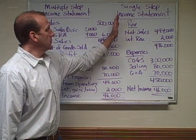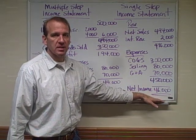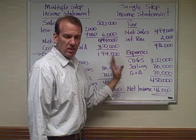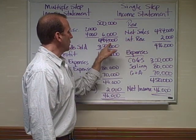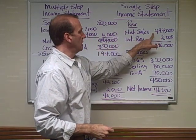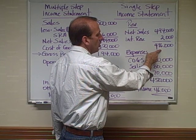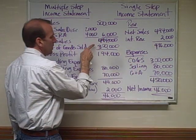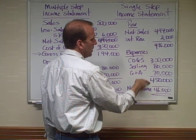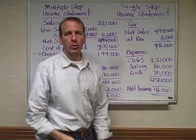The single-step income statement is a lot simpler and smaller, but it hits the same answer: net income of $46,000. There's just not going to be as much detail — they start with revenues and subtract out expenses. Notice that net sales is $494,000; they didn't detail out the returns, allowances, and discounts. They just took the net amount. Then interest revenue of $2,000 gives total revenues of $496,000. Expenses — cost of goods sold, selling, and general and administrative — total $450,000. So $496,000 minus $450,000 equals net income of $46,000.